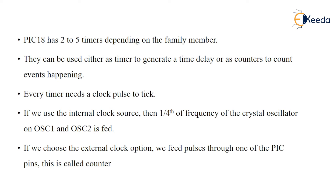In architecture, a timer is used to generate a time delay. If you want some delay between subsequent events, you have to write a program for that. Timer will act as an interrupt — when one task is completed and the next task has to be performed after some time, you call a timer as an interrupt. Timer will start counting from whatever count value you have given in its registers.